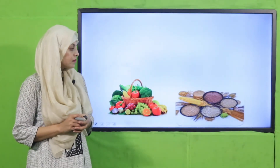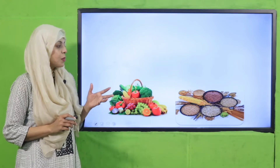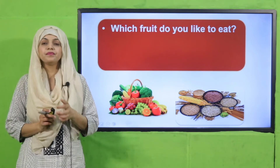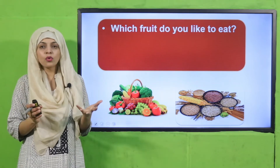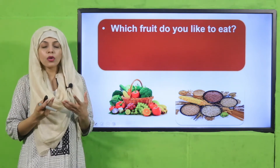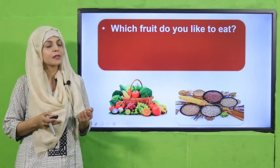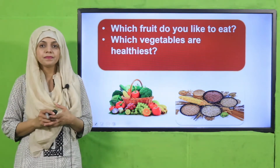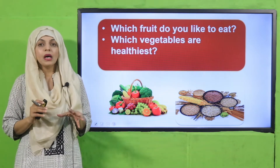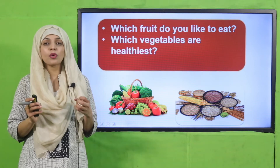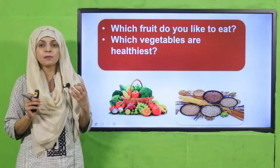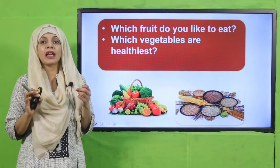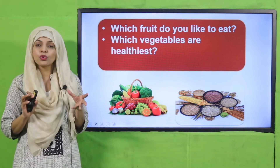Let's quickly start with an activity on fruits, vegetables, and grains. Which fruit do you like to eat? I like mangoes, watermelons, oranges, and apples. Which vegetables are healthiest? All vegetables are very good for your health, especially the green leafy vegetables — they are rich in iron and a very big source of iron.